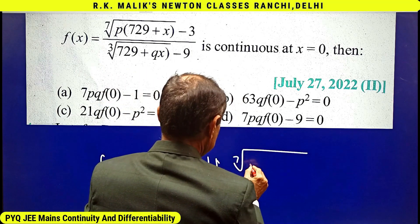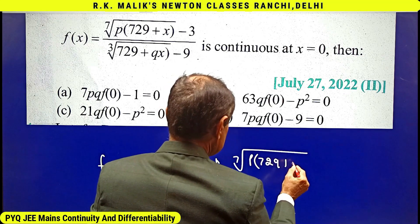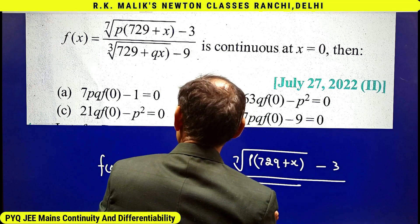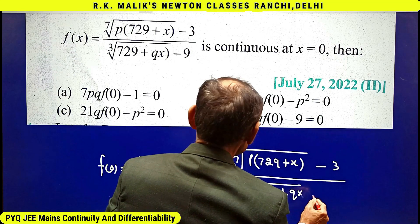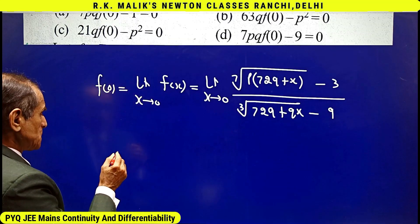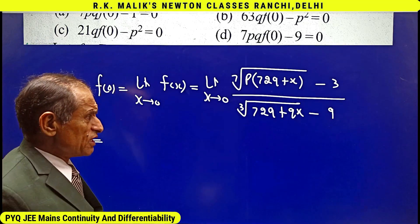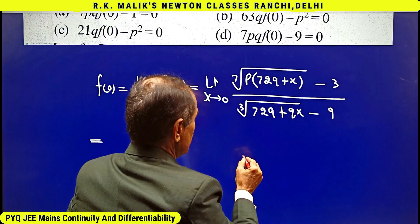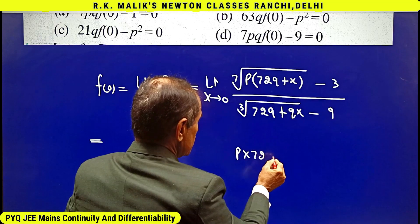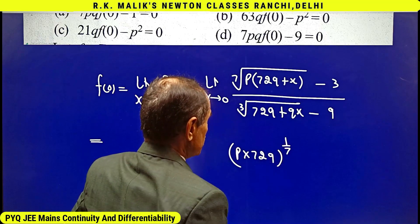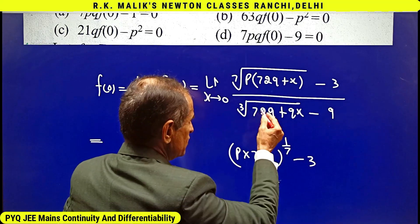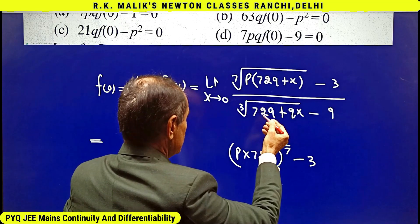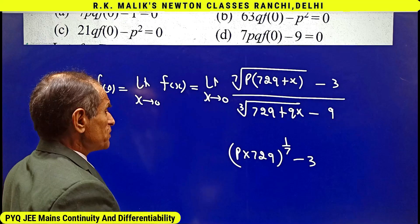This limit is the 7th root of (p times 729 plus x) minus 3, all upon the cube root of (729 plus qx) minus 9. We check which form this is: as x tends to 0, the numerator tends to the 7th root of (p times 729) minus 3, and the denominator tends to 0 because 729 to the power 1/3 is 9. For continuity, f(0) must be a finite number.